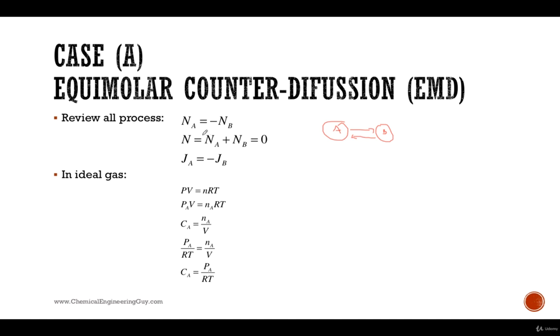So first things first, review the process. Remember that NA equals negative NB because this is counter diffusion, therefore NA plus NB equals zero. So you were to watch molecules going, let's say that you were able to see molecules of A and molecules of B, but let's say that A and B are not branded, they are just molecules.